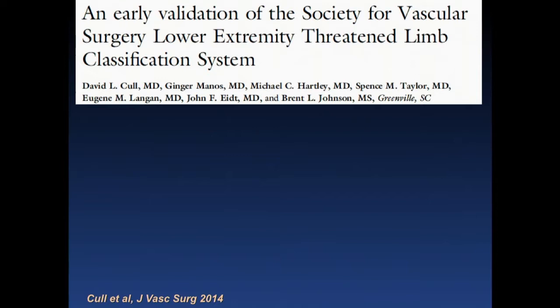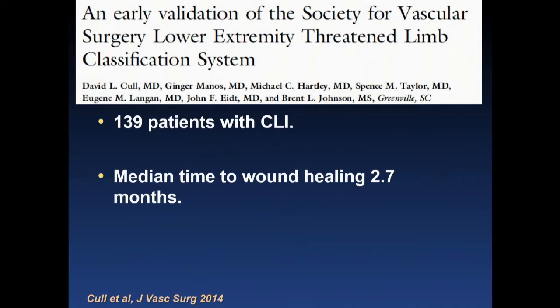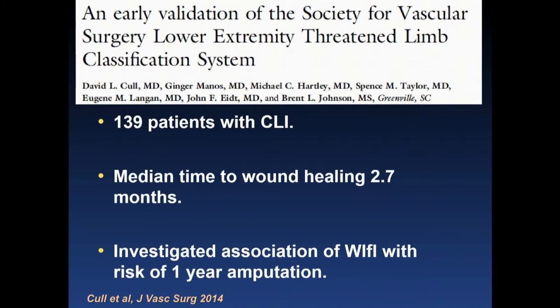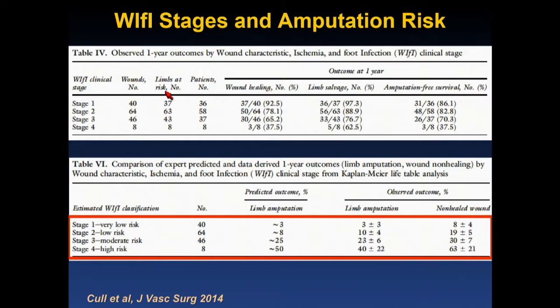One of the first validation papers — since the WIfI score was developed without validation against actual outcomes — was performed by Cull et al. among 139 patients with CLI. The median time to wound healing was 2.7 months. For stages 1, 2, 3, and 4, the predicted major amputation rates from the Delphi consensus were 3, 8, 25, and 50 percent. The observed outcomes were 3, 10, 23, and 40 percent — closely matching predictions — confirming association between WIfI staging and risk of major amputation and lack of wound healing.